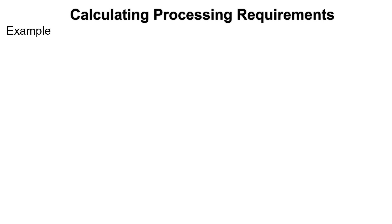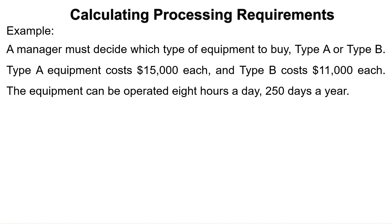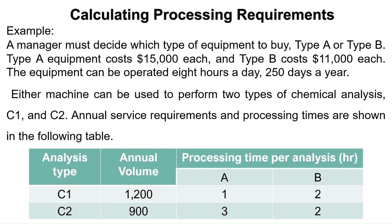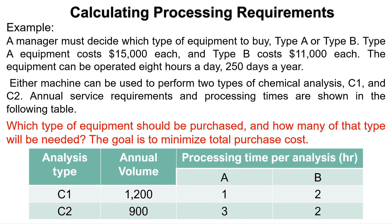The same procedure can be used to help in decision making. A manager must decide which type of equipment to buy: Type A or Type B. Type A equipment costs $15,000 each and Type B costs $11,000 each. The equipment can be operated 8 hours a day, 250 days a year. Either machine can be used to perform two types of chemical analysis, C1 and C2. Annual service requirements and processing times are shown in the table. The goal is to minimize total purchase cost.